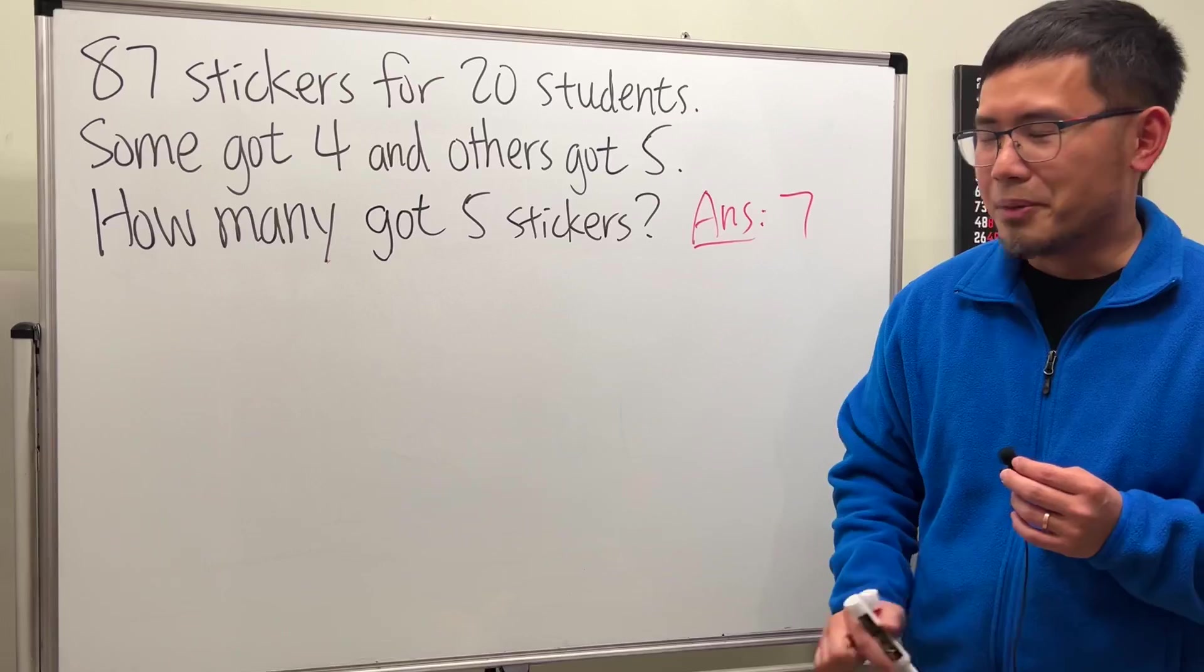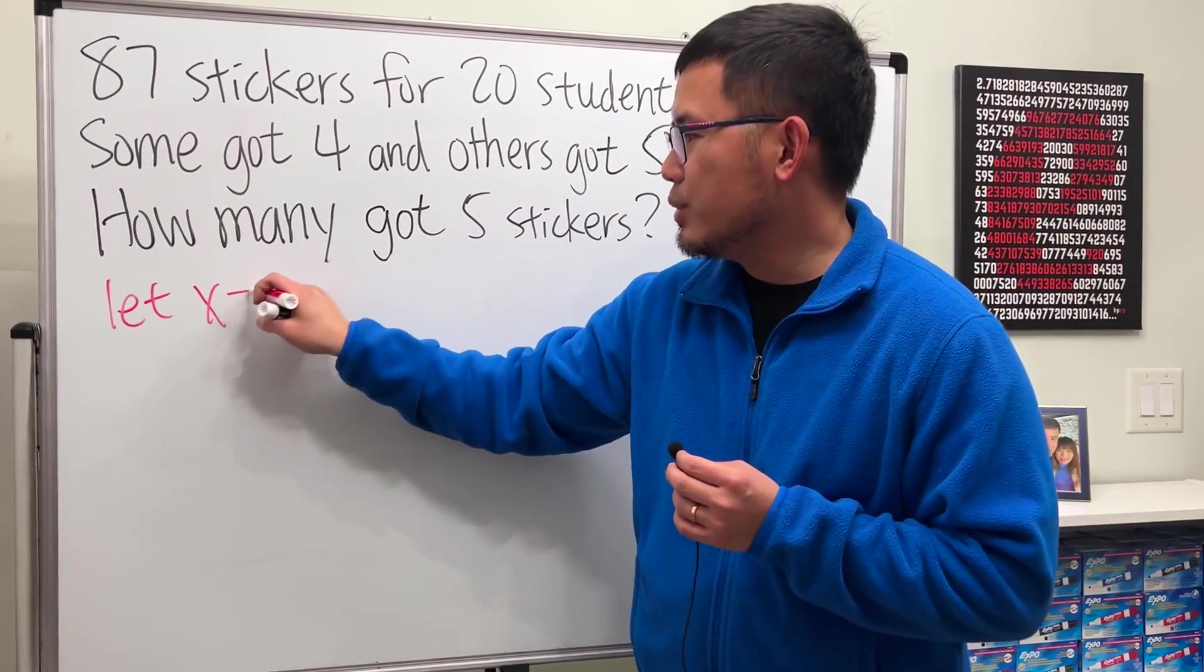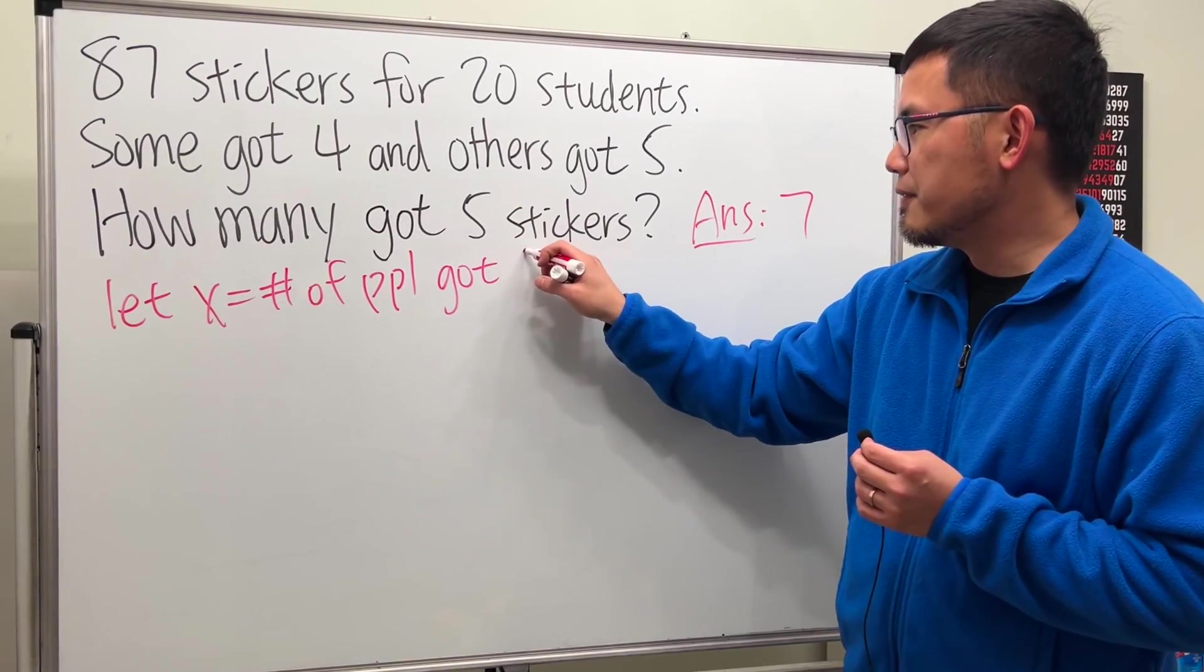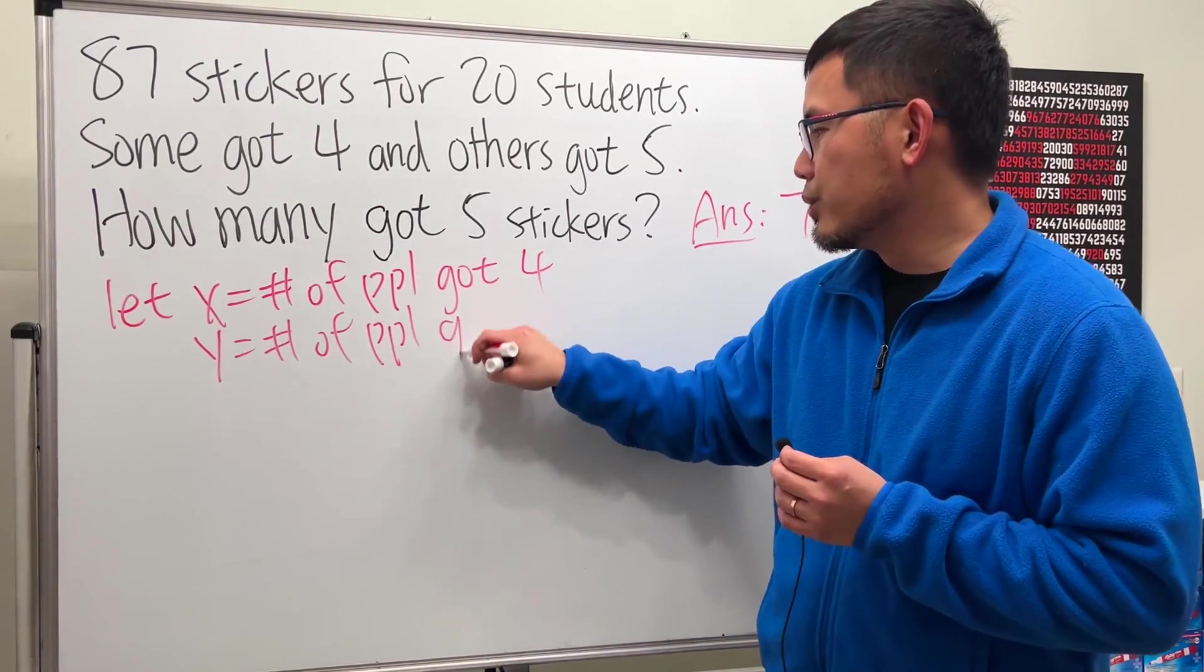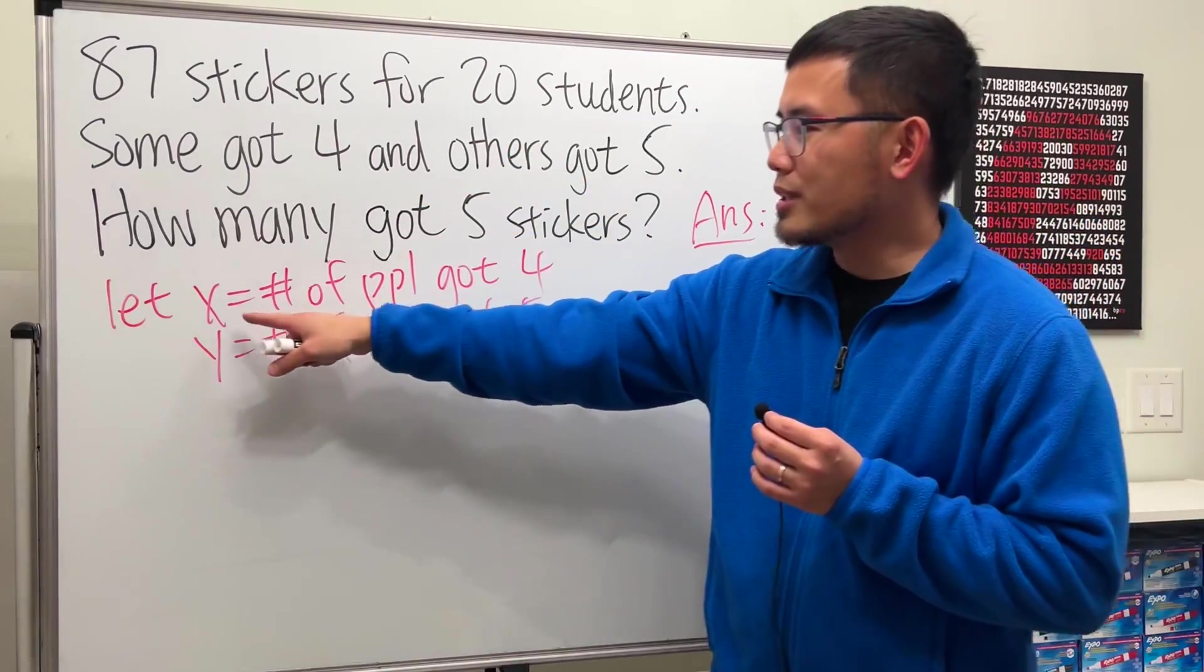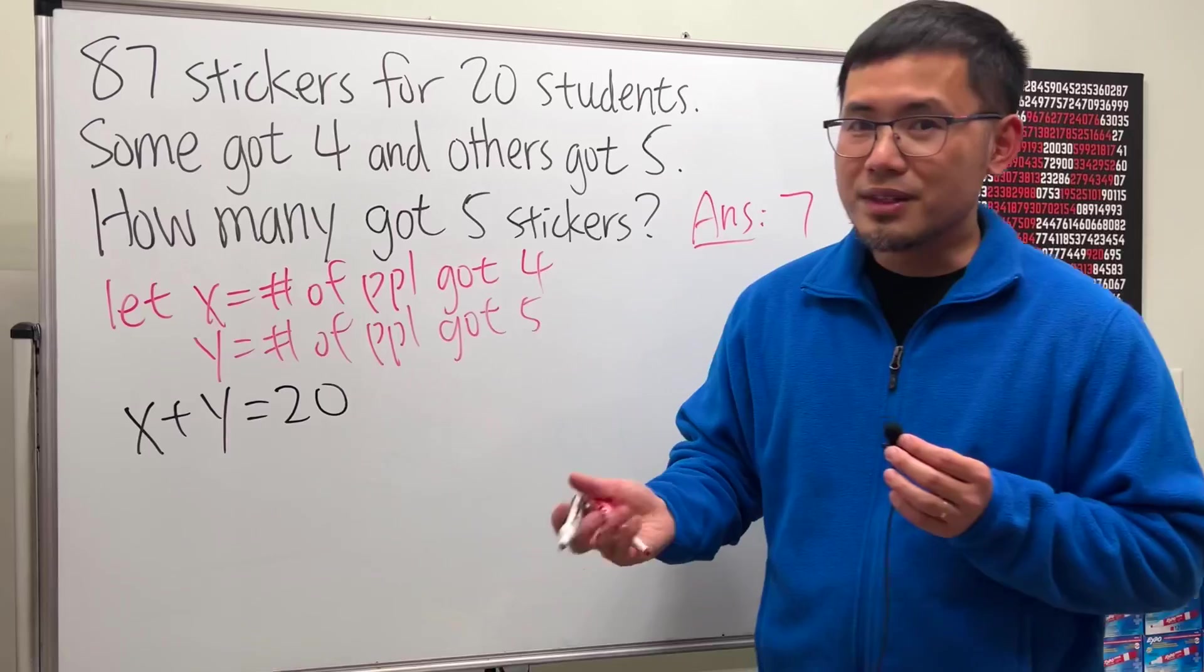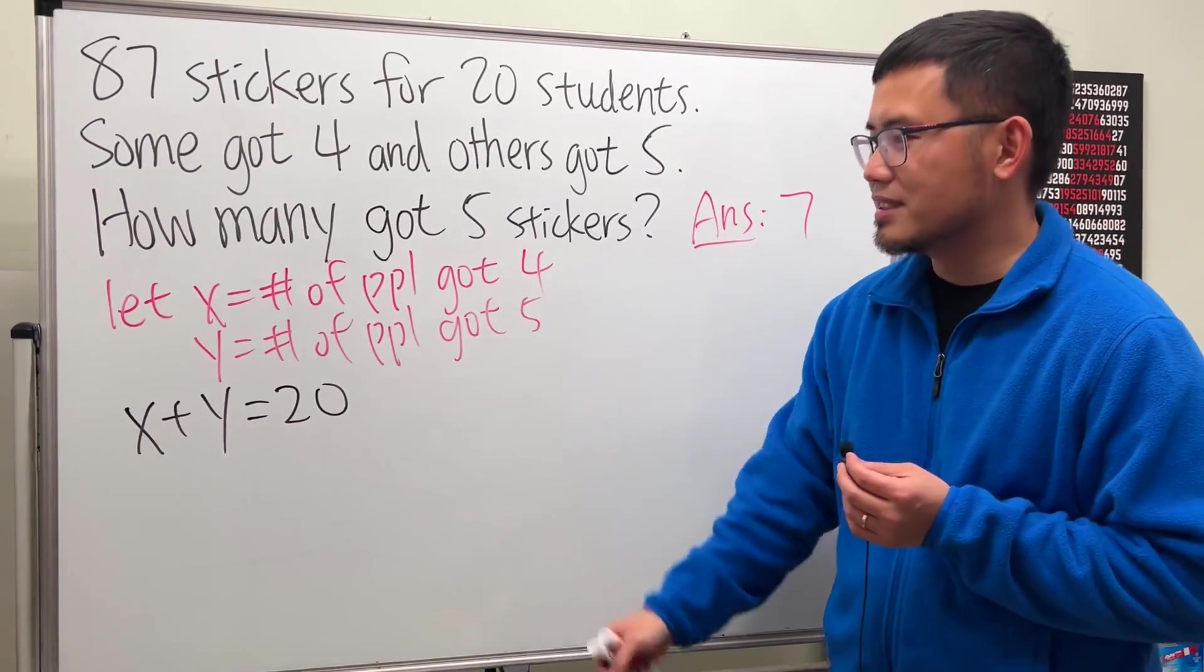Why don't I show you the system of equations too? Here we go. Firstly, let's go ahead and define our variables. Let me say that X is equal to the number of people who got four stickers, and then I say Y equals the number of people who got five stickers. From here, we must know that X plus Y equals 20, because that's the total number of students that we are dealing with. So that's the first equation.